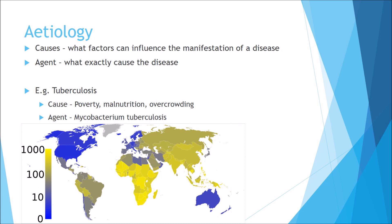Under etiology, you have causes and agents. Causes are the factors that influence the manifestation of a disease, while the agent is what exactly causes the disease. For example, with tuberculosis, the causes include poverty, malnutrition and overcrowding, while the agent that causes TB is Mycobacterium tuberculosis.